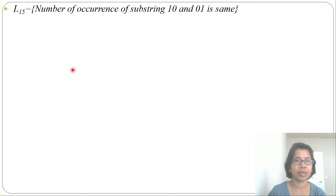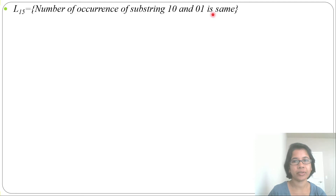Let's design DFA for some more languages. The first language is: the number of occurrences of substring '10' and '01' are the same — that is, however many times '10' appears, '01' must appear the same number of times.